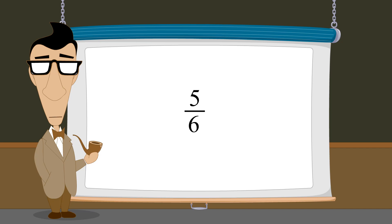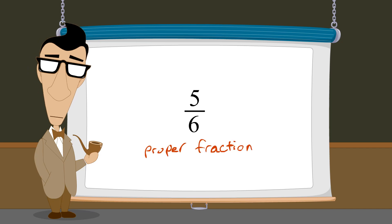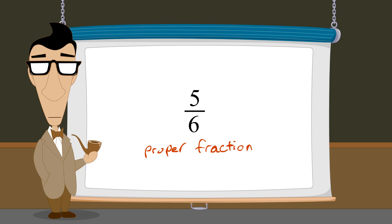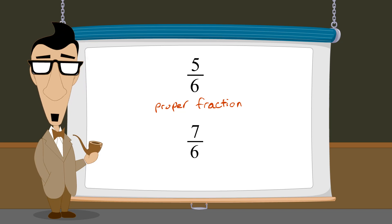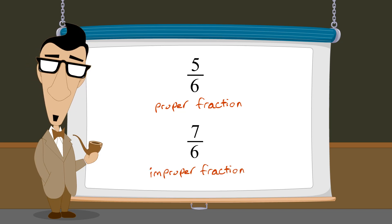The fraction five-sixths is called a proper fraction, since it represents a value less than one. However, sometimes arithmetic operations result in fractions greater than one, called improper fractions. In the next lecture, we will learn how to convert these improper fractions to a different form involving an integer plus a proper fraction.